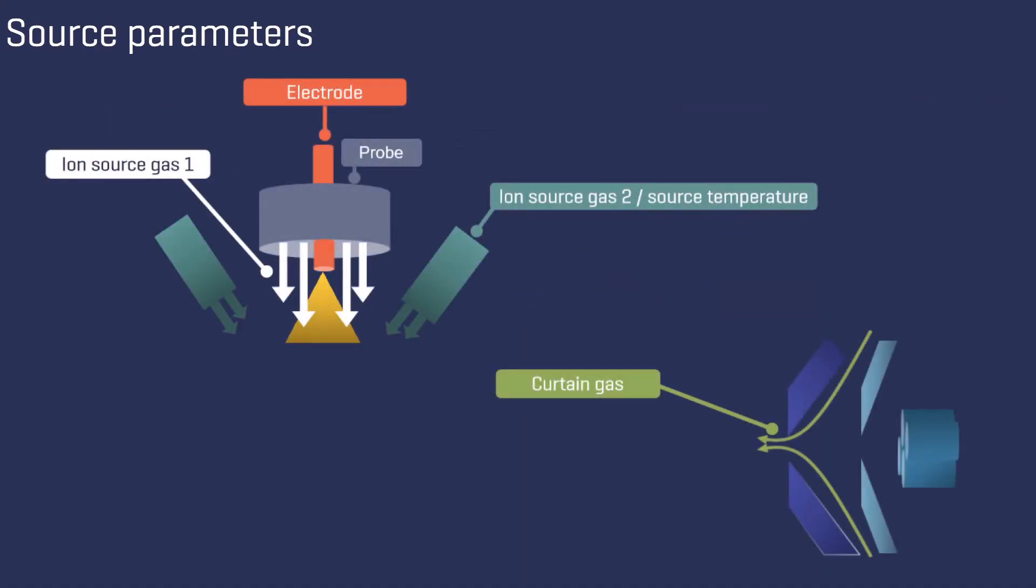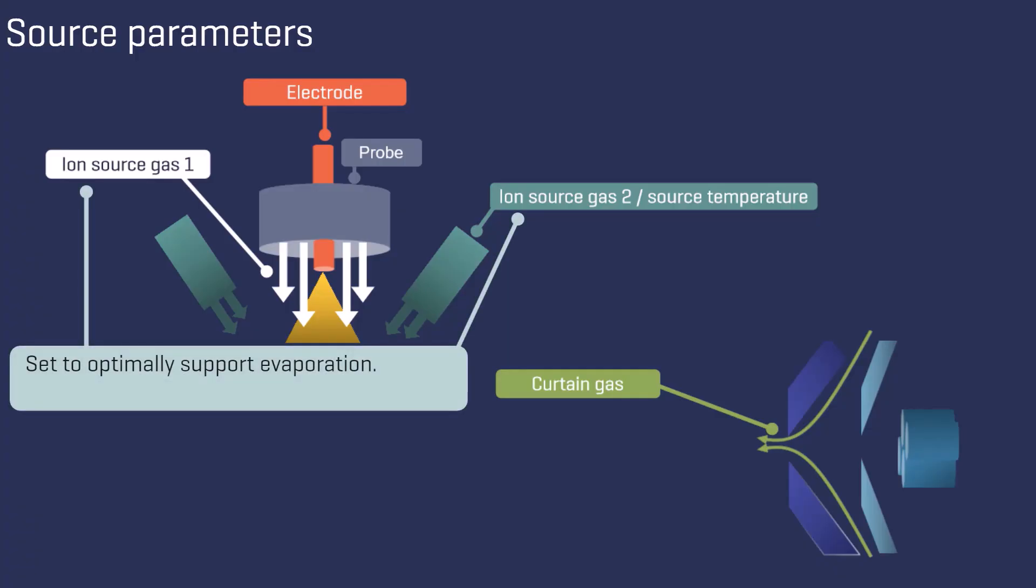It is essential to optimize the source parameters specific to your analysis. Set the values of ion source gases 1 and 2 to optimally support the evaporation of the droplets. If set too high, the droplets will be blown away.